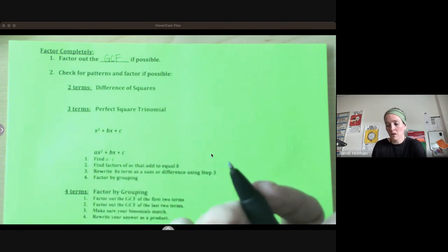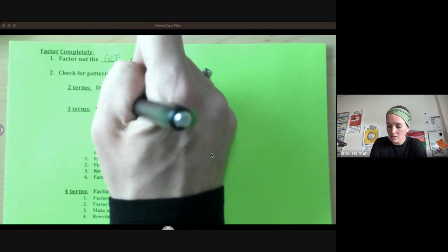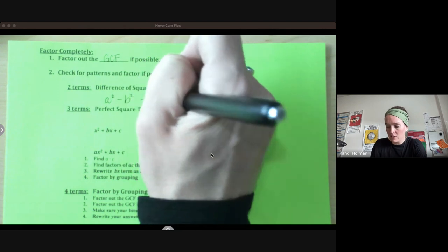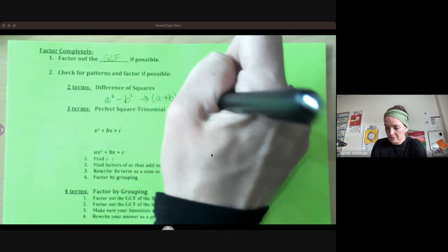So two terms, the only pattern we're looking for is a difference of squares. So if it's two things that are perfect squares that are being subtracted, this factors to a plus b times a minus b.